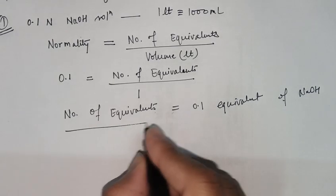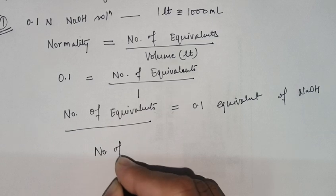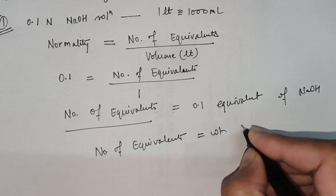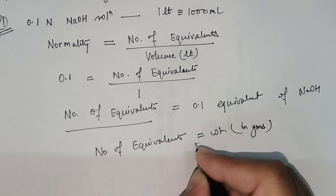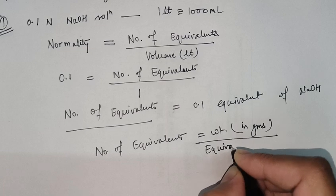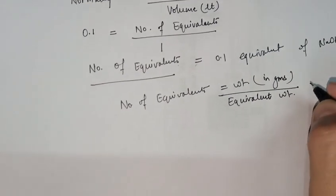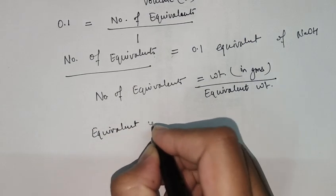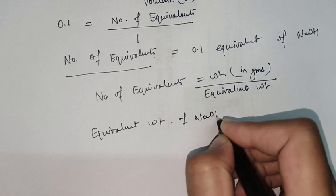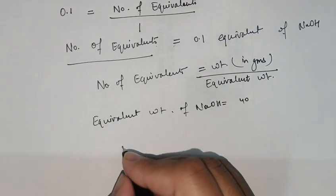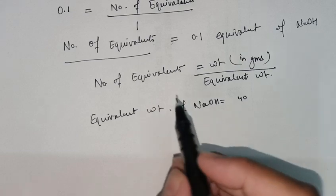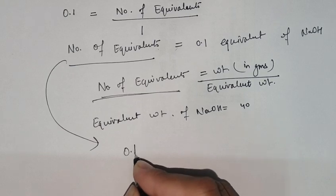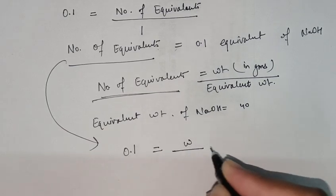Now what is number of equivalents? According to the formula, number of equivalents equals weight in grams upon equivalent weight. In case of NaOH, the equivalent weight equals 40. So we know 0.1 equivalent is required.